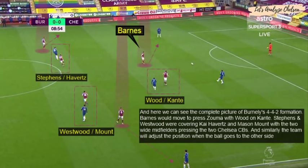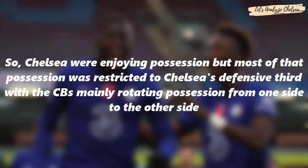Here we can see the complete picture of Burnley's 4-4-2 formation. Ashley Barnes would press Zouma with Wood on N'Golo Kante, Stephens and Westwood covering Kai Havertz and Mason Mount, and the two wide midfielders pressing the two Chelsea fullbacks. The team would adjust positions whenever the ball moved to the other side. Chelsea were enjoying possession but most of it was restricted to their defensive third, with the centre-backs mainly rotating the ball from side to side.